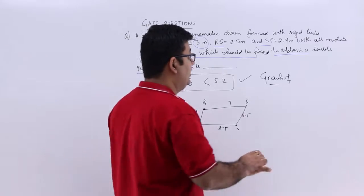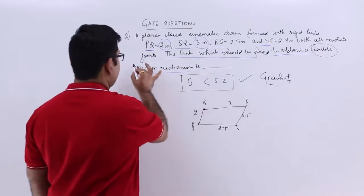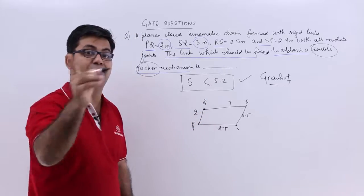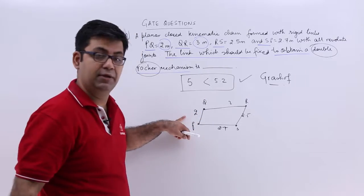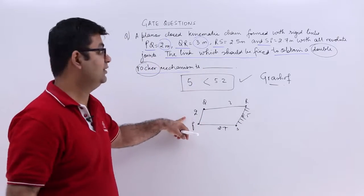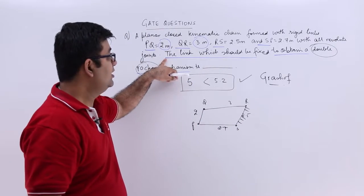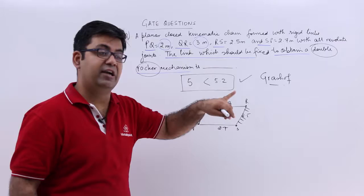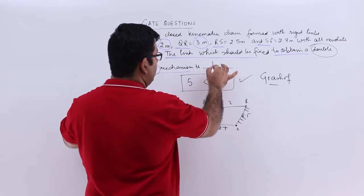As I told you, to obtain a double rocker mechanism, fix the link opposite to the shortest link. And that is RS. So you will fix this link. The answer is that the link which should be fixed to obtain a double rocker mechanism is RS.